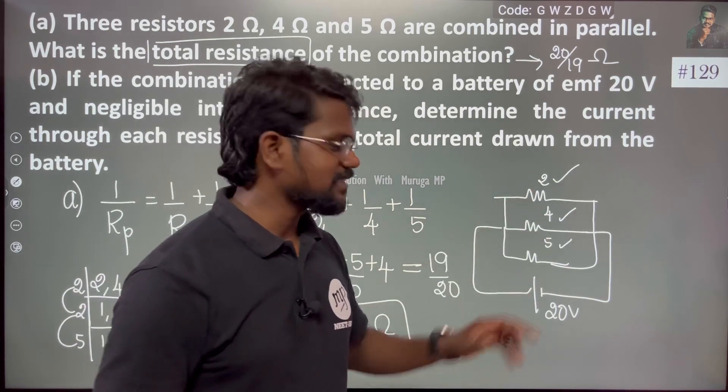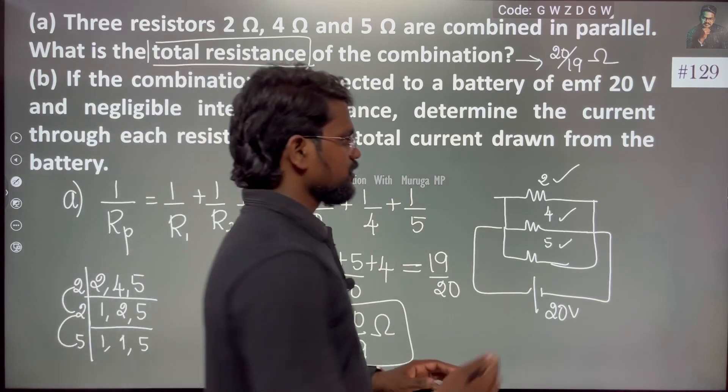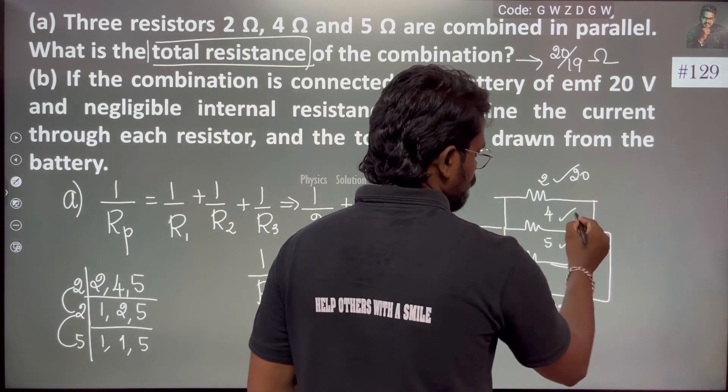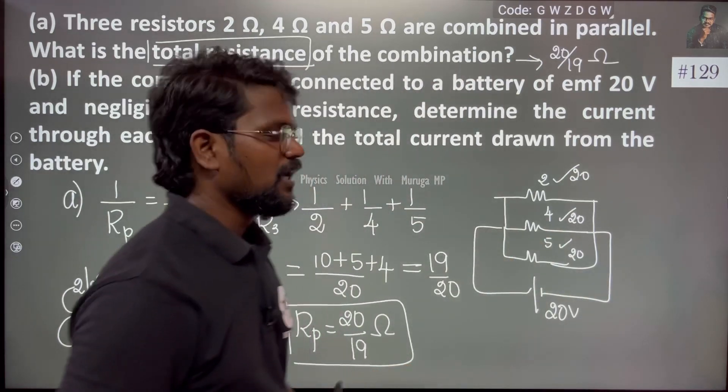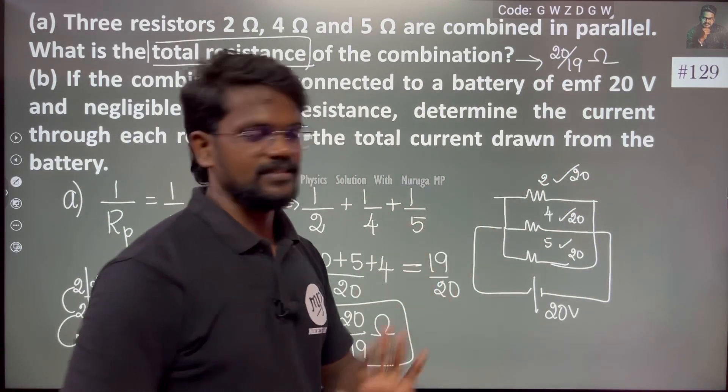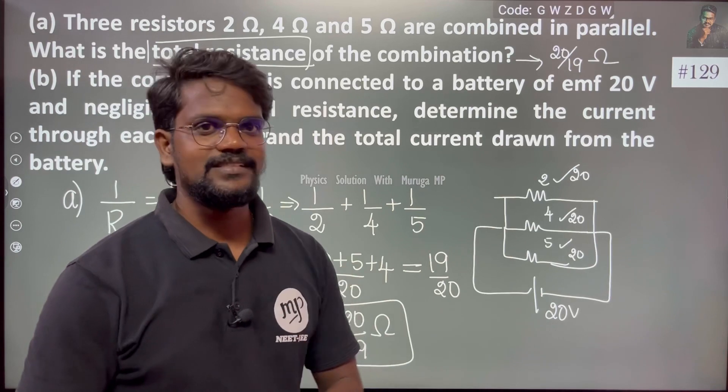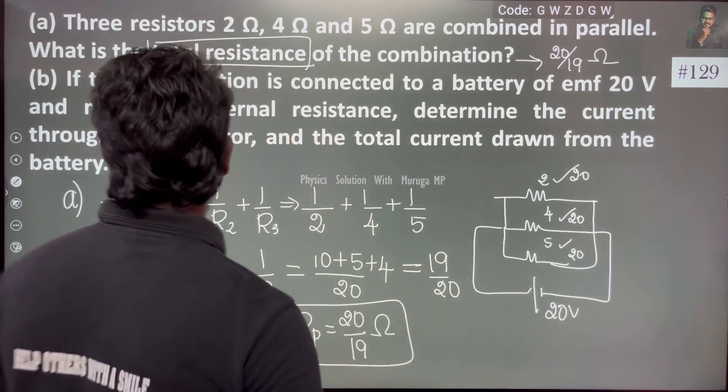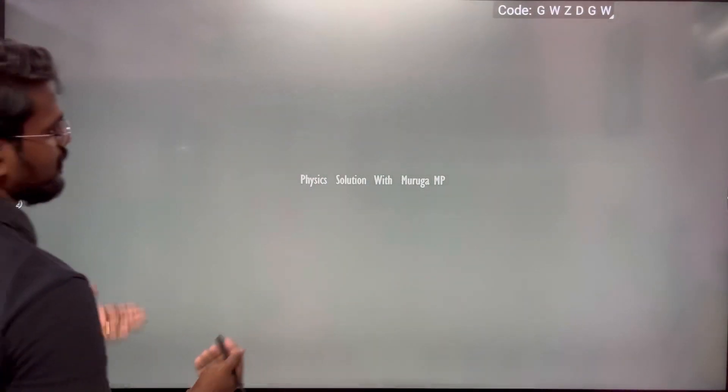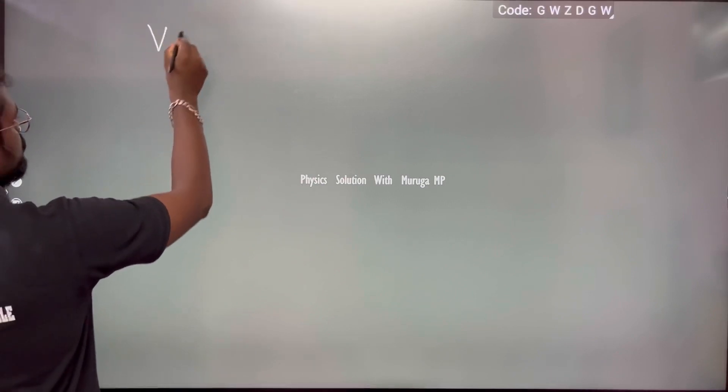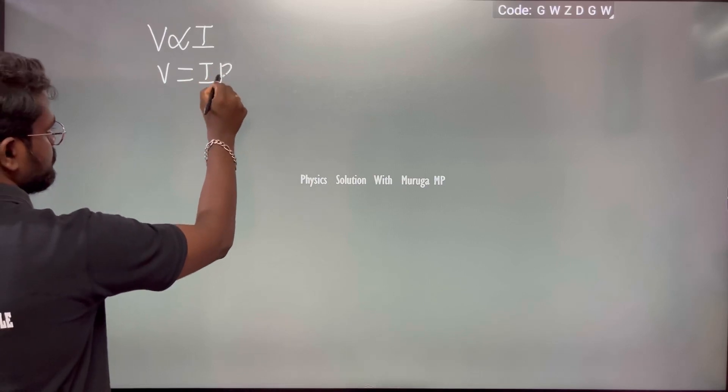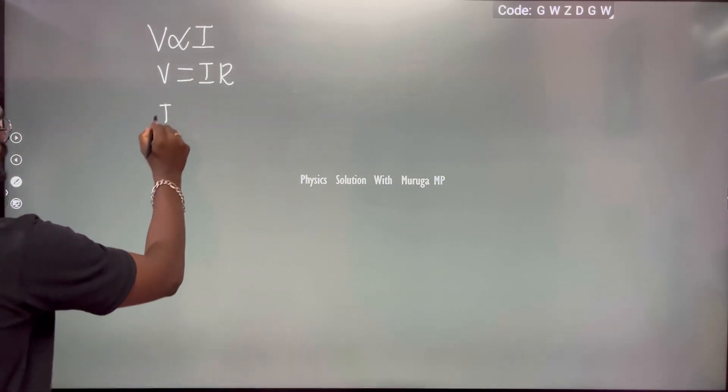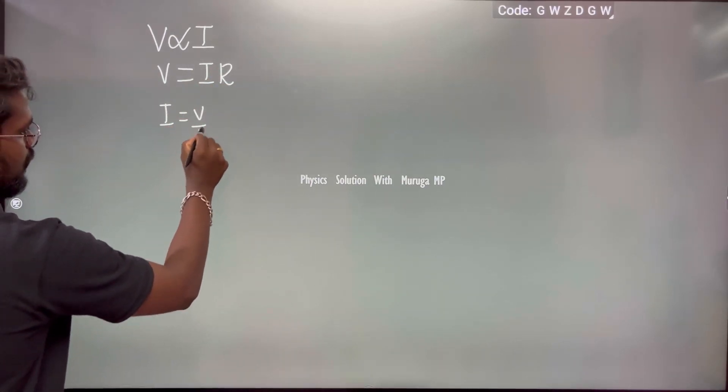Since all three resistors are connected in parallel, voltage will be 20 volts, 20 volts, 20 volts. Then V equals IR. It is very easy. Obviously, we are going to use Ohm's law: V is directly proportional to I, V equals I times R. Therefore I equals V/R.